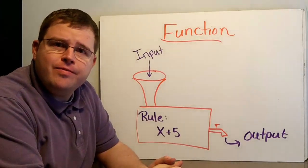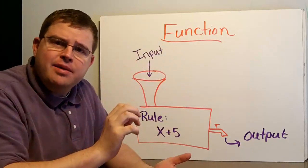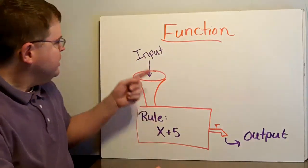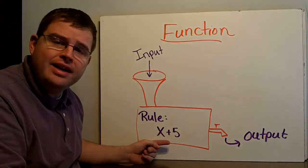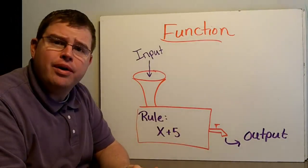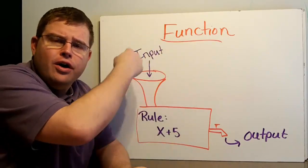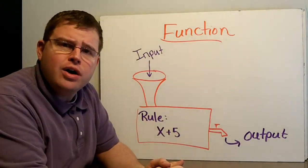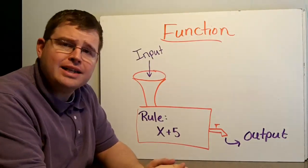We've spent a lot of time this year talking about functions. Remember, a function is simply a rule that takes an input, does something to it, and then gives it out as an output. So we have a function machine here — we drop some number in, it takes that number and adds 5 to it, and it spits it out as an output. All of the numbers collectively that we put in are called the domain. All of the possible numbers that come out are called the range. Today we're going to look at a very special kind of function: an exponential function.